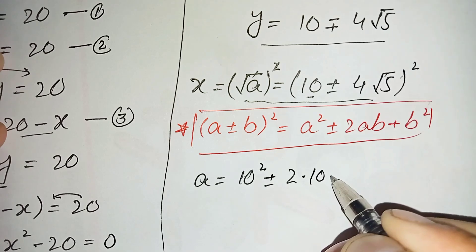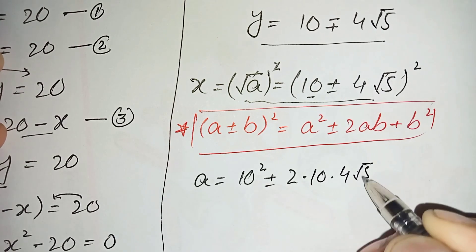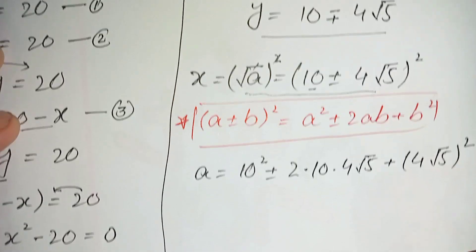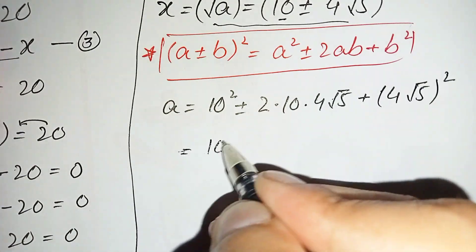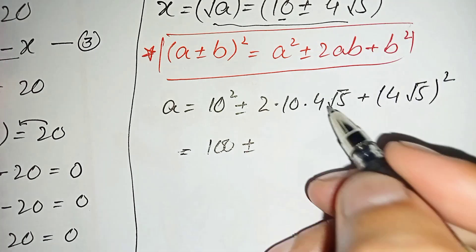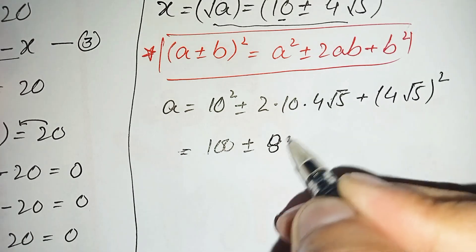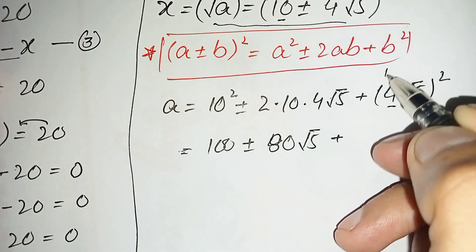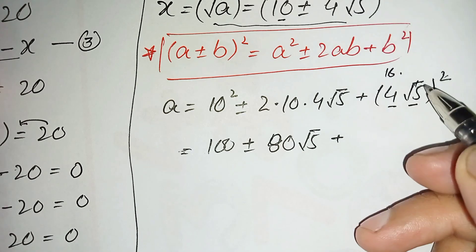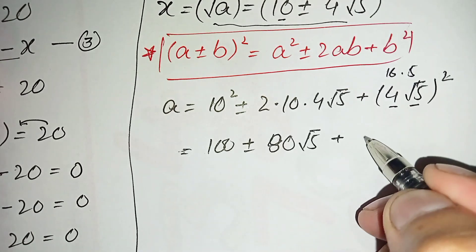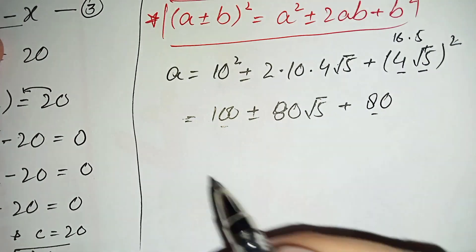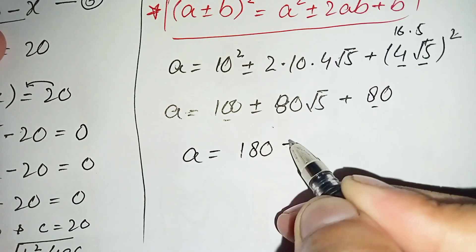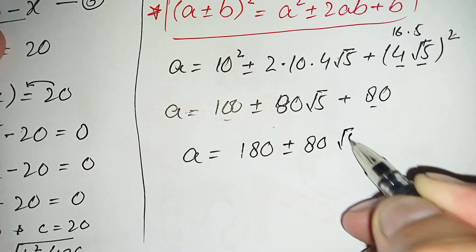Applying the identity with a = 10 and b = 4 root 5: a = 10 squared plus or minus 2 times 10 times 4 root 5 plus (4 root 5) squared. This gives a = 100 plus or minus 80 root 5 plus (16 times 5). Since 16 times 5 = 80, we get a = 100 plus 80 plus or minus 80 root 5, so a = 180 plus or minus 80 times square root of 5.